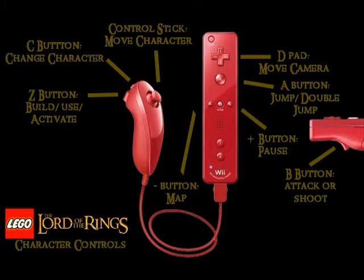If you use the D-pad, you will move the camera around, side to side or up and down. If you press the A button, you will jump or double jump. Double jump can also be called a combat roll, depending on what you're doing. There are some characters that if you do a jump and then press B, there's a certain jump attack they can do, such as Gimli.